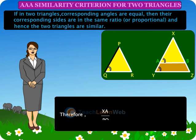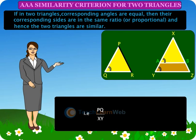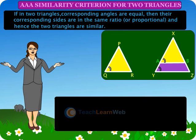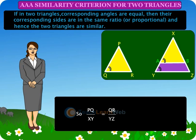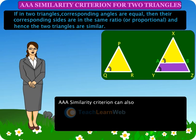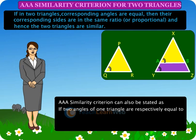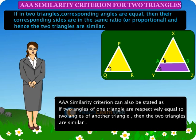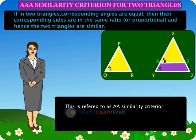Therefore, XA/PQ equals XB/PR, that is PQ/XY equals PR/XZ. Similarly, PQ/XY equals QR/YZ. So PQ/XY equals QR/YZ equals PR/XZ. The AAA similarity criterion can also be stated as: if two angles of one triangle are respectively equal to two angles of another triangle, then the two triangles are similar. This is referred to as the AA similarity criterion for two triangles.